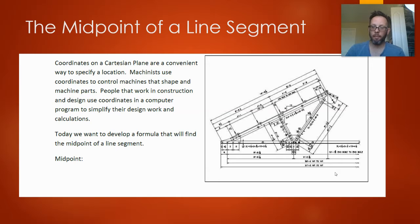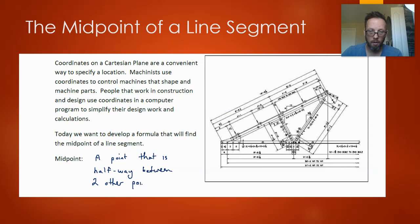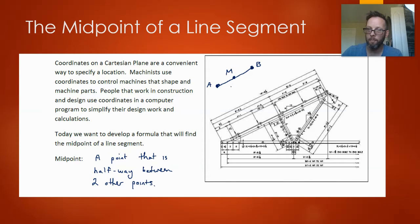Today we're going to talk about the midpoint of a line segment. Loosely speaking, a midpoint is simply the halfway point — a point that is halfway between two other points. Intuitively, if I said here's a point A and here's a point B with a line segment joining them, and I asked you roughly where the midpoint of that line segment would be — halfway in between. So that's a visual of what the midpoint is. Often we'll use the capital M, sometimes with a subscript AB, to say that's the midpoint of the line segment from A to B.